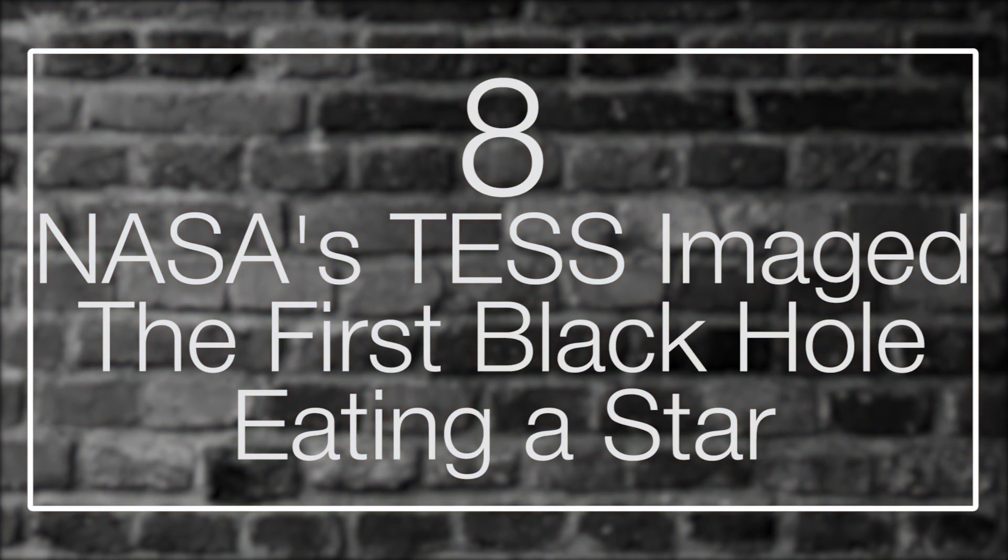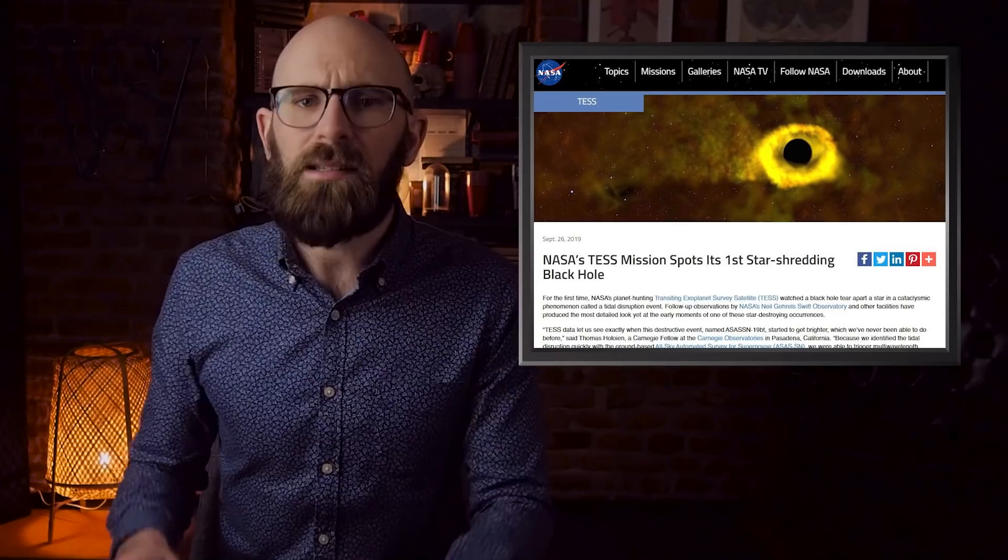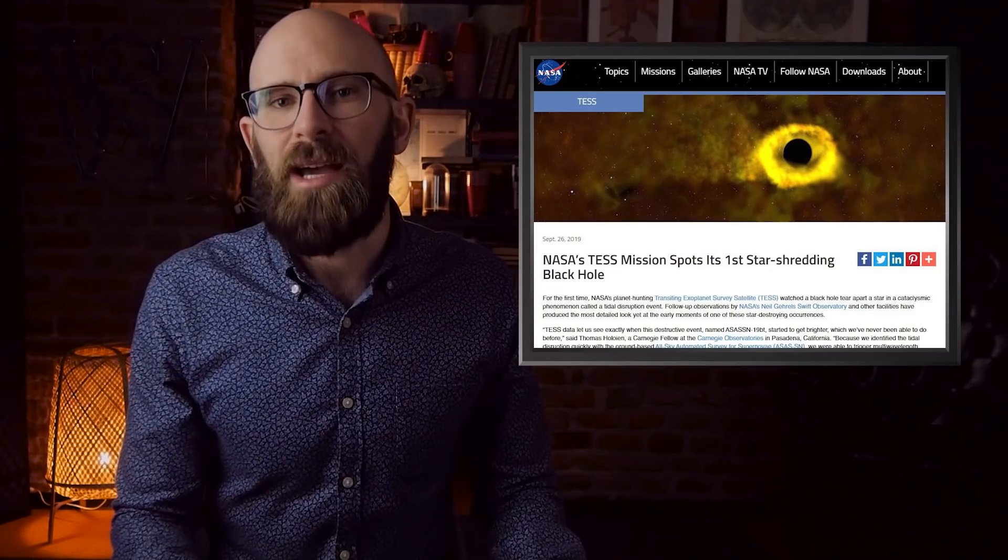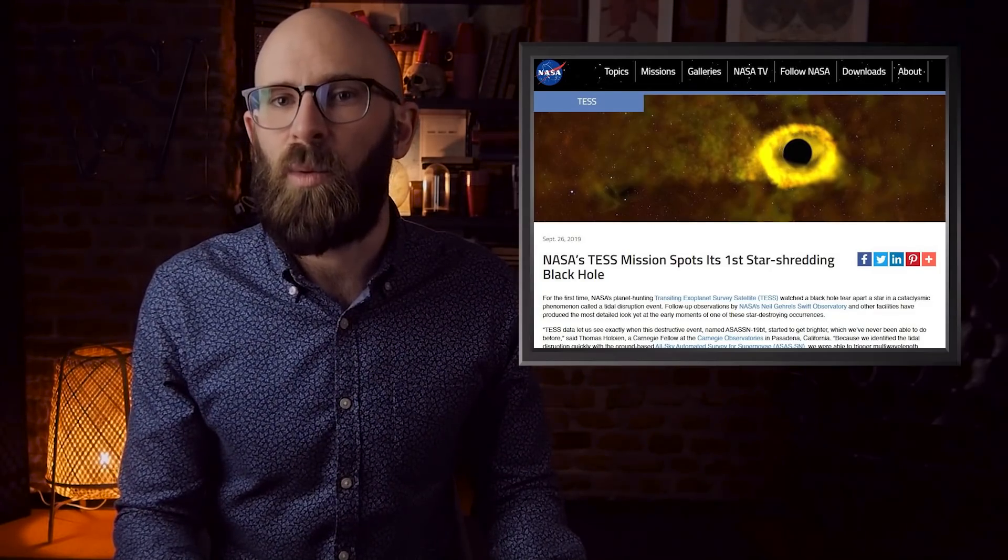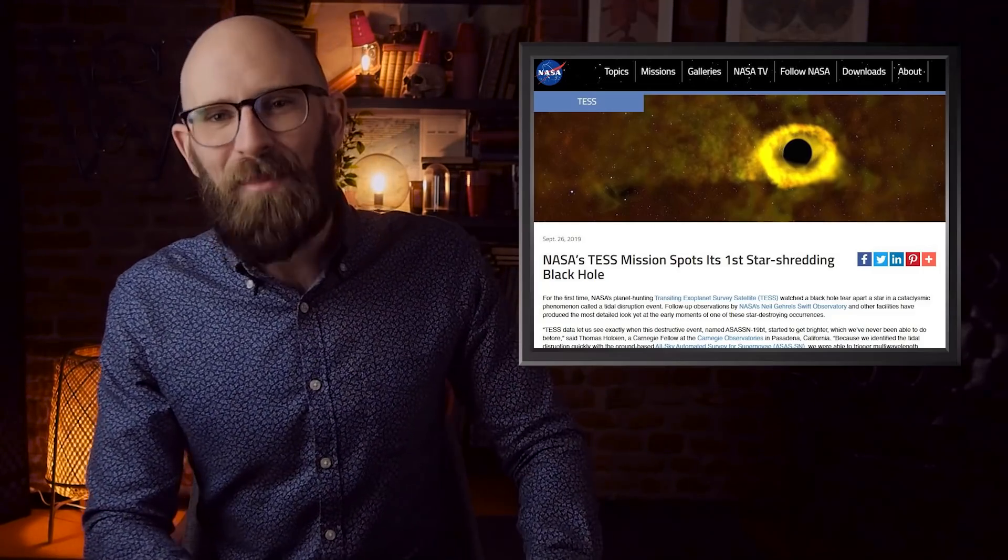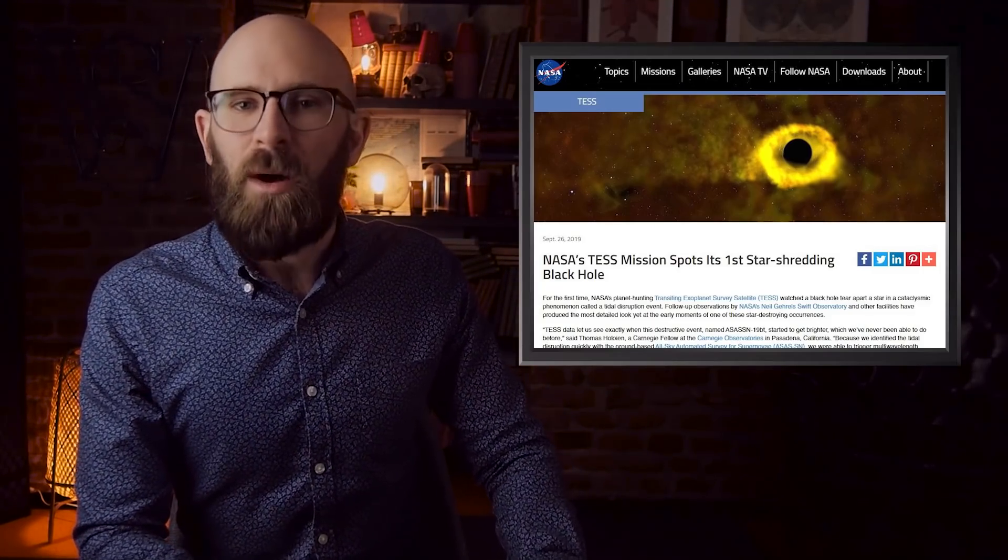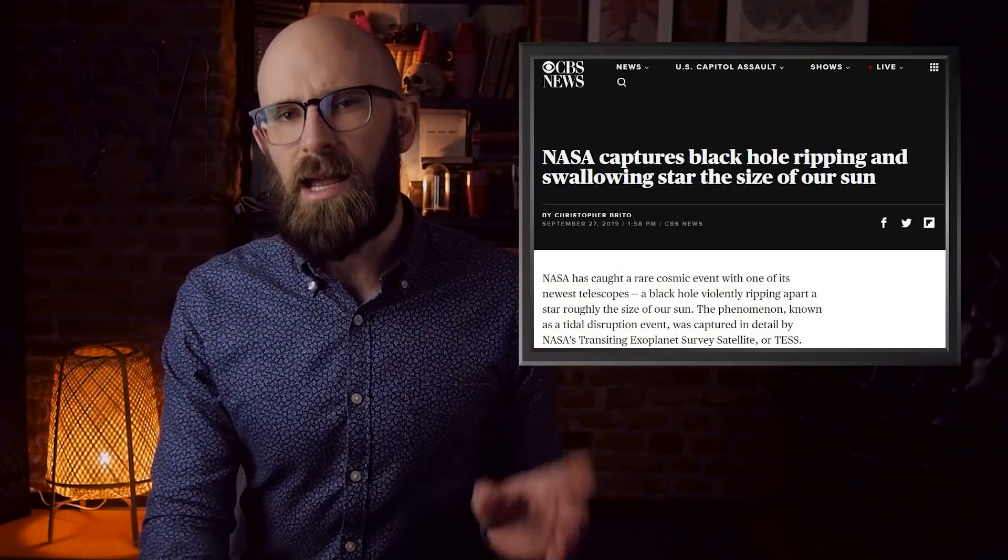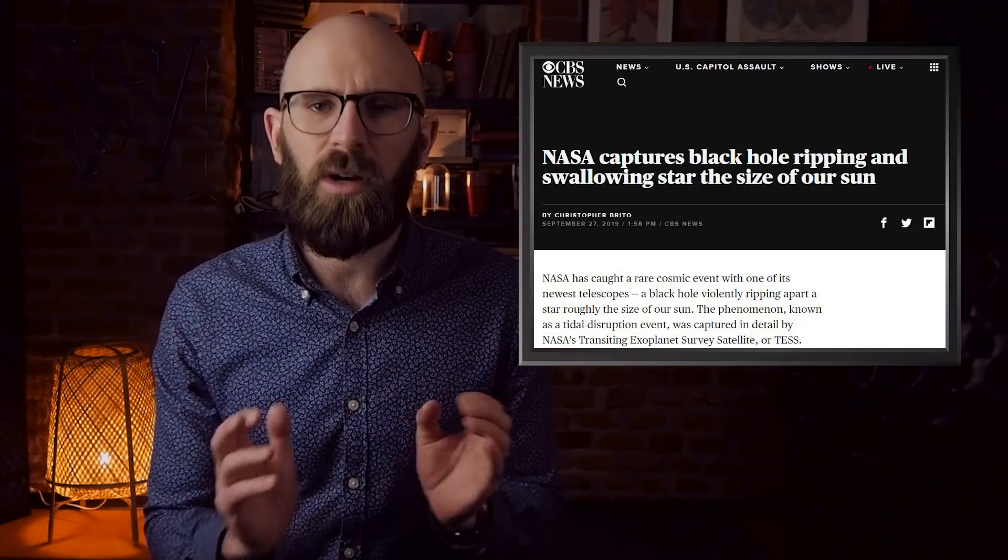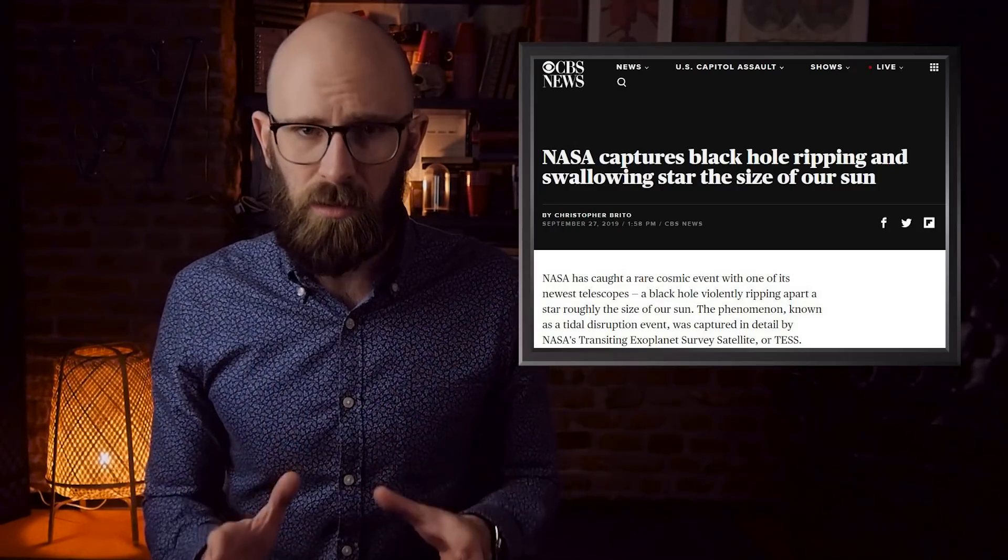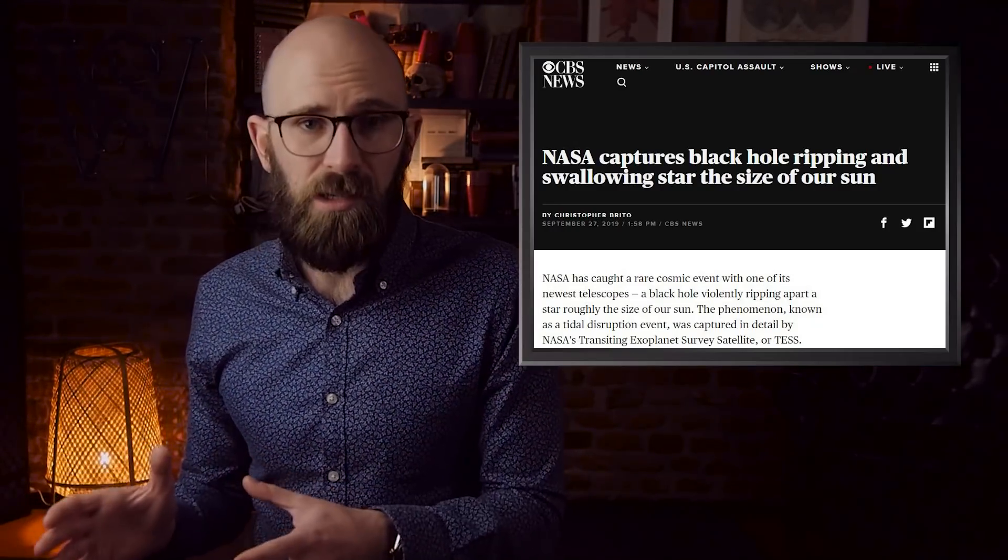Number 8: NASA's TESS Imaged the First Black Hole Eating a Star. NASA's TESS, or Transiting Exoplanet Survey Satellite, managed to catch an incredible event after watching the stars in galaxy 2MASX J07001137-6602251. Amazingly, it detected a brightening from one of the galaxy's stars and confirmed that a tidal disruption event had occurred. After enlisting NASA's Neil Gehrels Swift Observatory and others, astronomers were able to determine that the event they were observing was the world's first look at the early moments of a black hole consuming a star.